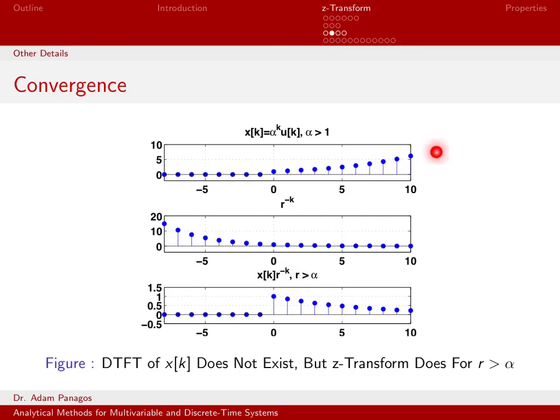So while the DTFT does not exist for this signal, for certain values of r, namely any r that's greater than alpha, the z-transform does exist. And I can actually compute the z-transform of this signal. So that is why we like the z-transform, why it's a more general transform type because it can handle signals that the DTFT cannot handle.